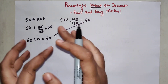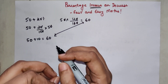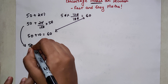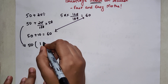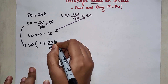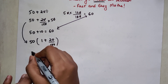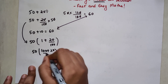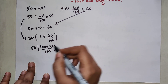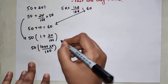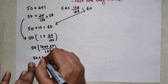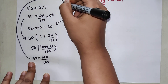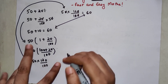Now you might be wondering how this works, so let me give you a quick explanation. In the original step, I take 50 common, leaving 1 plus 20 upon 100. Taking the LCM gives 50 into (100 plus 20) upon 100, which is 50 into 120 upon 100 — exactly what I just showed you.